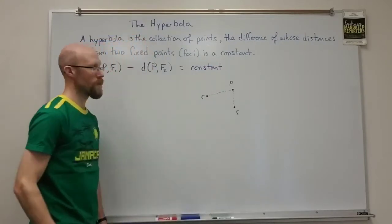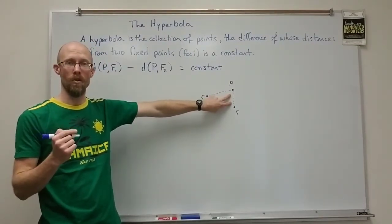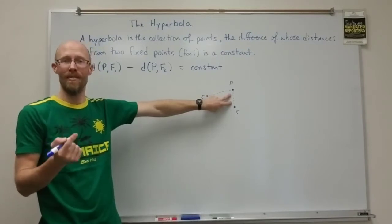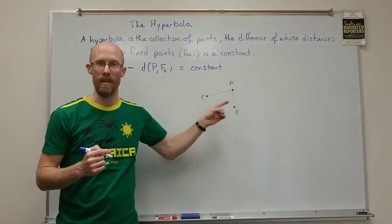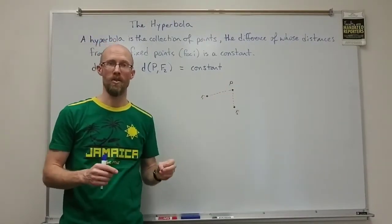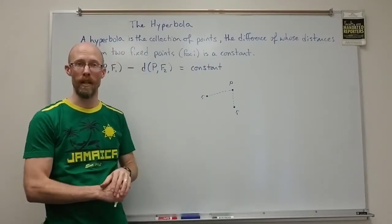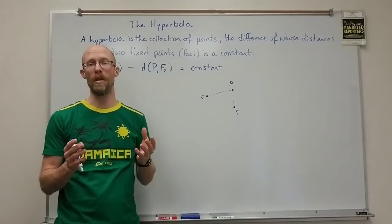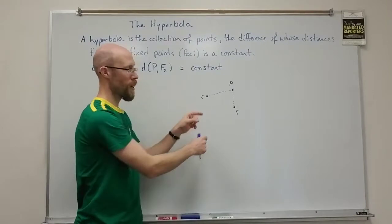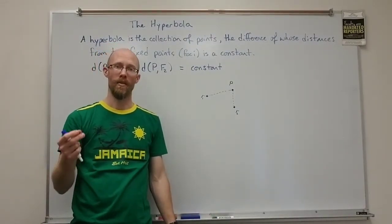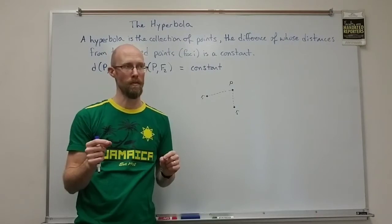For instance, if one distance was four and the other was three, the difference is one. So you'd look for all points whose difference of distances is one — you could have five and four, eight and seven, or 10.5 and 9.5. As long as the difference between the distances is fixed, you have a point on the hyperbola. There are really three things that define the hyperbola: the location of the foci and that fixed distance.